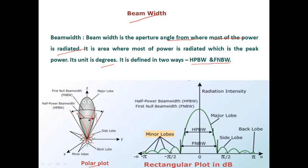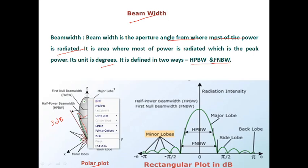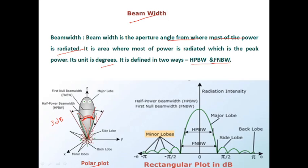When the power has fallen to half of its maximum value, it is called the half power beam width. In the lab, you may recall the 3 dB line — where we draw a line 3 dB below the maxima. The same applies here: at 3 dB below the maxima, we mark the half power beam width. Simply defined, half power beam width is where power has fallen to half of its maximum value.